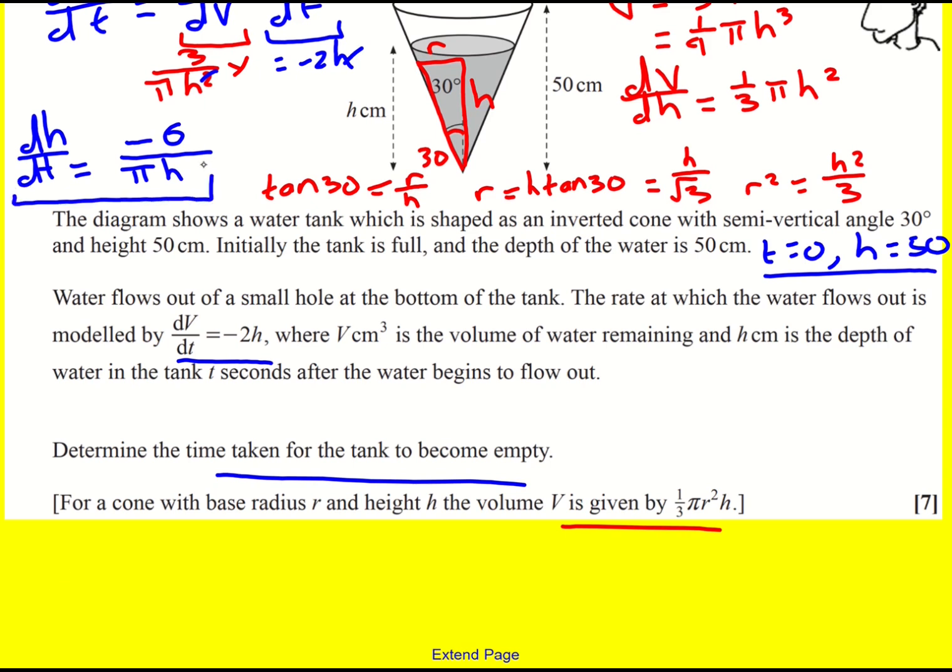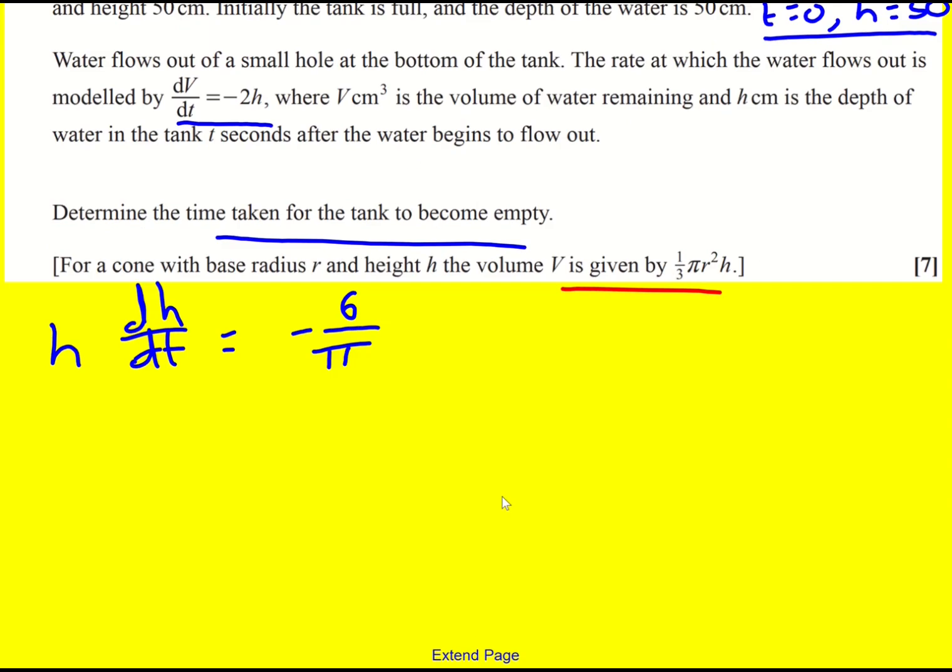So what I'm going to do is separate the variables. We have to do this because we can't just integrate with respect to T. H is dependent on T. But you can't just stick an integral sign around here and deal with that. Instead, I'm going to multiply through by H. So it's going to be H times dH by dT equals minus six over pi. I'm going to leave the constants over onto the right. It just seems to make more sense to do that. And now what I can do is integrate both sides with respect to T. Because what happens is, again using the chain rule, this simply becomes dH.